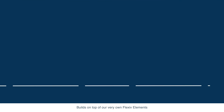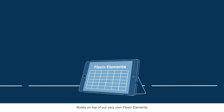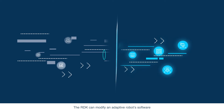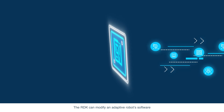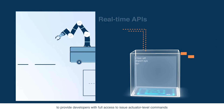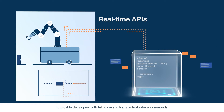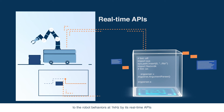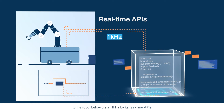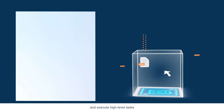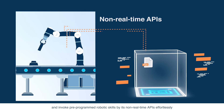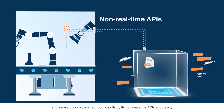Building on top of our very own Flexiv Elements, the RDK can modify adaptive robot software to provide developers with full access to issue actuator-level commands to robot behaviors at 1 kHz via its real-time APIs.